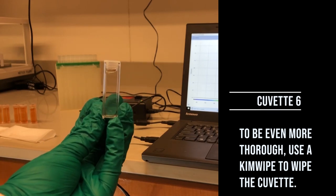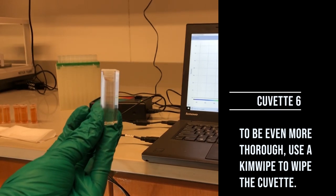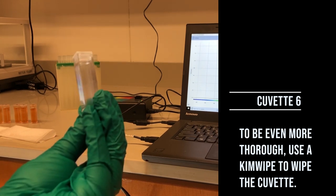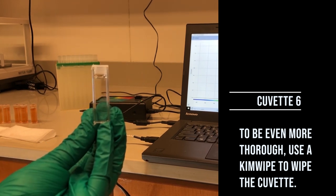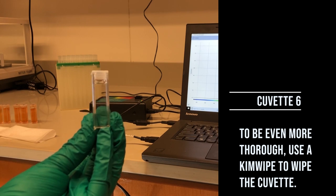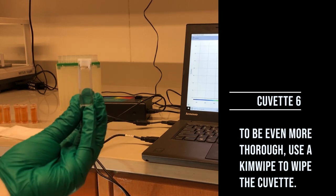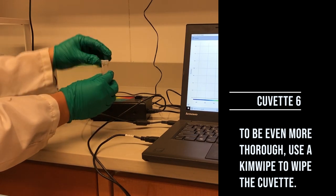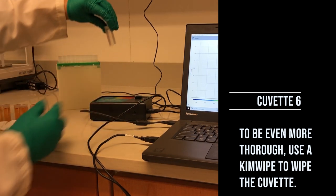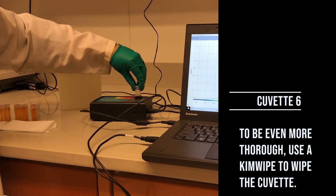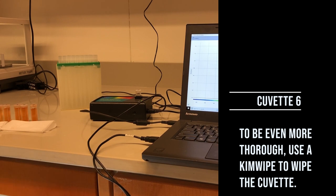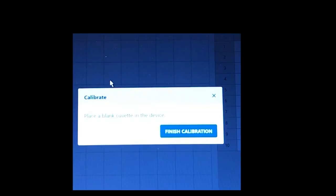We should place the blank cuvette into the spectrometer. You must align the cuvette in the spectrophotometer and be sure not to place the ridges in the path of the light. Once the blank cuvette has been inserted, click Finish Calibration and your absorption spectrum should read 0.